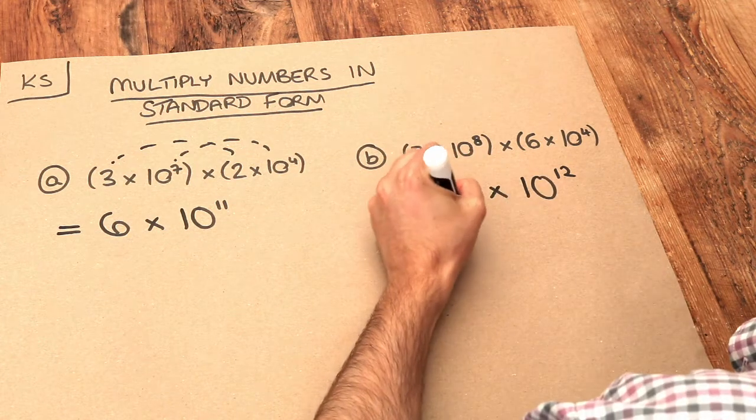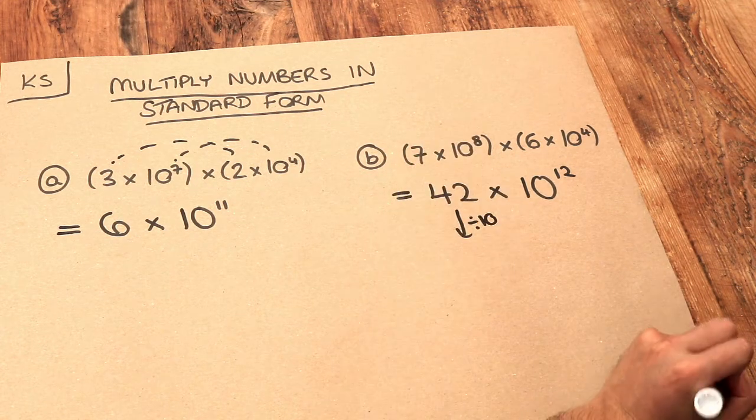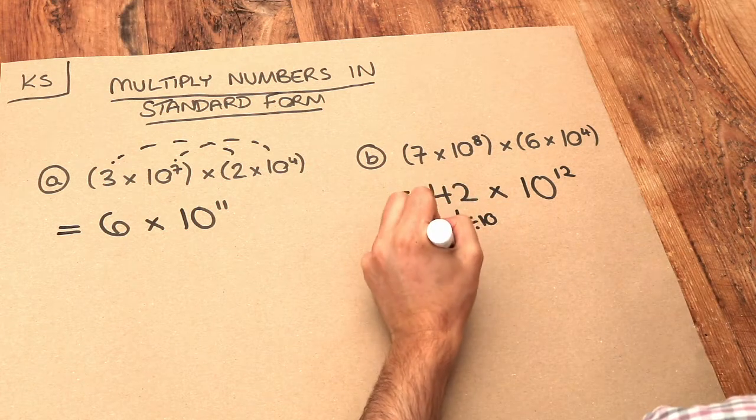So therefore we could just divide this by 10 to make it be between 1 and 10. So the 42 now is 4.2.